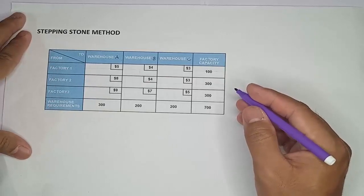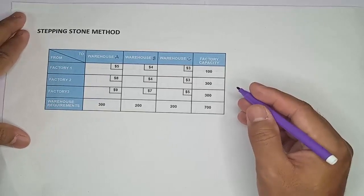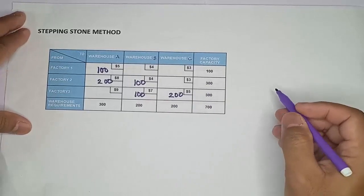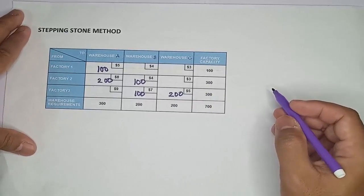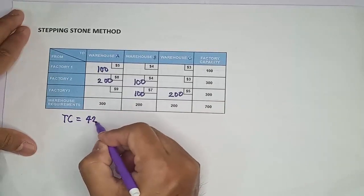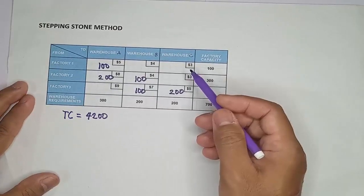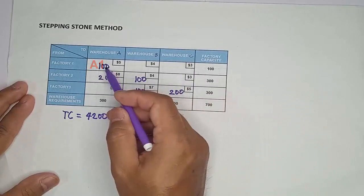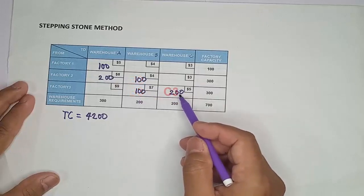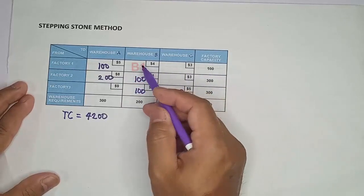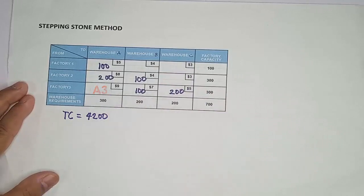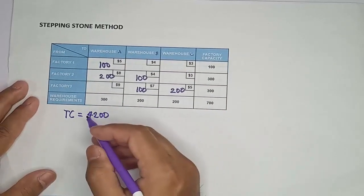To start with, we're going to use the northwest corner as a starting feasible solution, in which the initial transportation cost is equal to $4,200. The used cells are coded as A1, A2, B2, B3, and C3. The unused cells are B1, C1, C2, and A3, so we need to identify the unused cells.